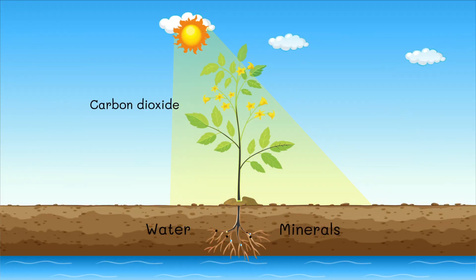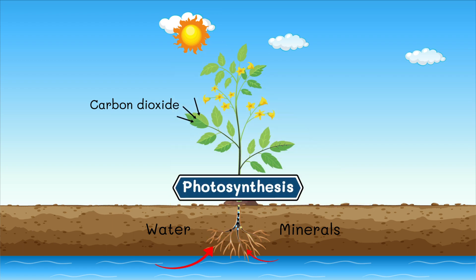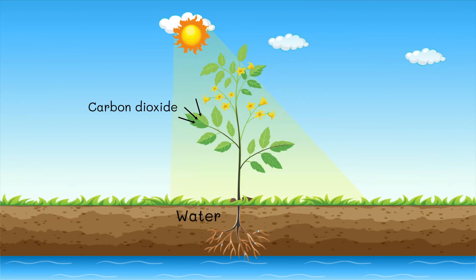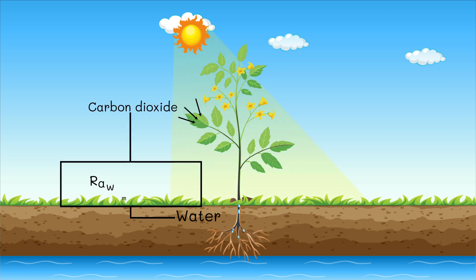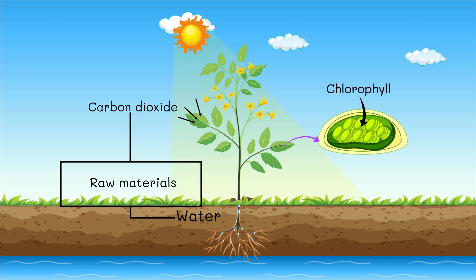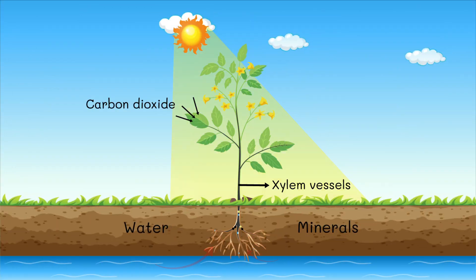In this video, we are discussing the process of photosynthesis. We know that carbon dioxide and water are the raw materials needed for photosynthesis in the presence of chlorophyll and sunlight. We also learned how these materials reach the leaves.